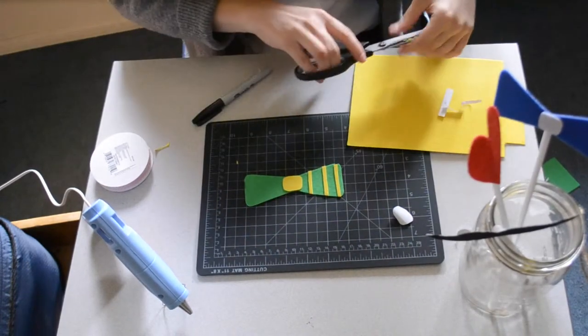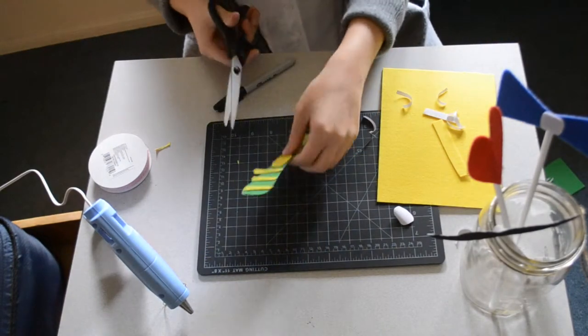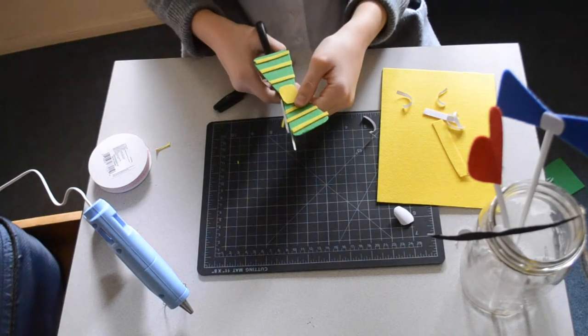Now we're going to do the same thing on the other side. Okay, once you got all the decorations on the other side too, you're just going to go ahead and trim the edges just like so.